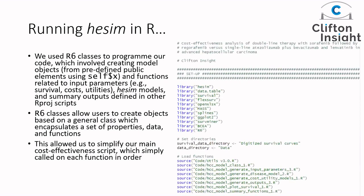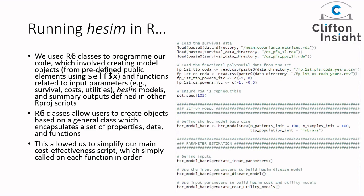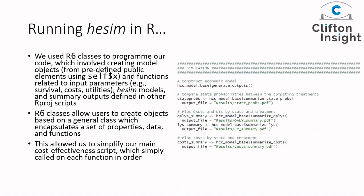We also programmed our code using R6 classes, which involved creating predefined public elements initialized separately in another script. We then generated functions related to input parameters, functions for building and combining Heemod models, and functions for generating output. This allowed us to simplify our main script: we just loaded libraries, set directories, loaded R6 class functions and input parameters, loaded survival data including fractional polynomials, set our seed for reproducibility, initialized the number of patients and samples, set baseline characteristics, generated input parameters, fed these to our Heemod disease and cost-utility models, and generated outputs including state occupancy, QALYs, life years, and costs — all within R using the BCEA package.